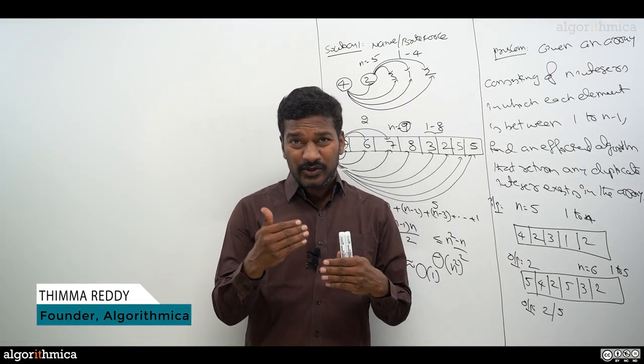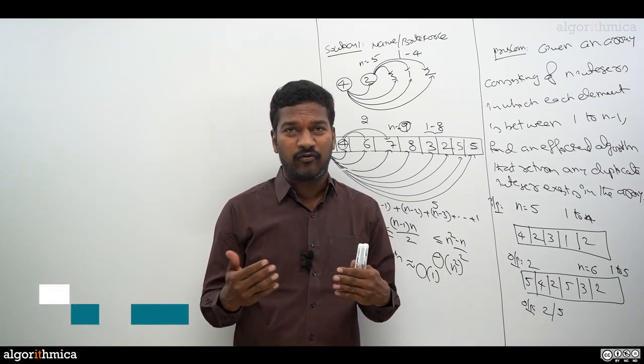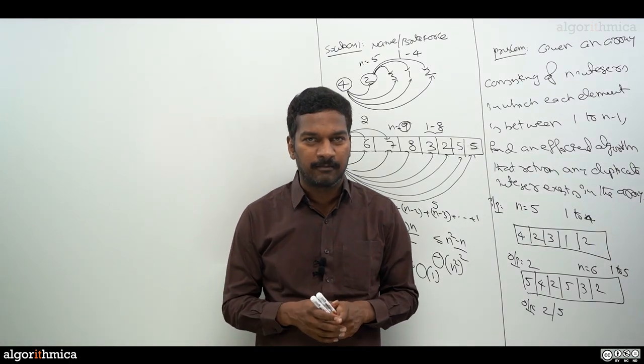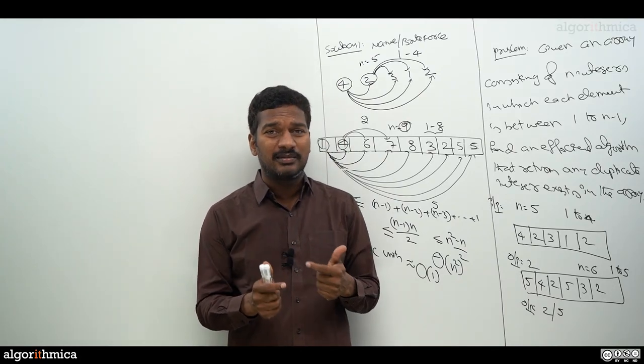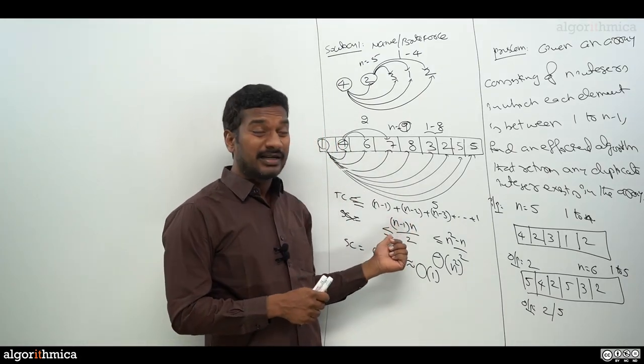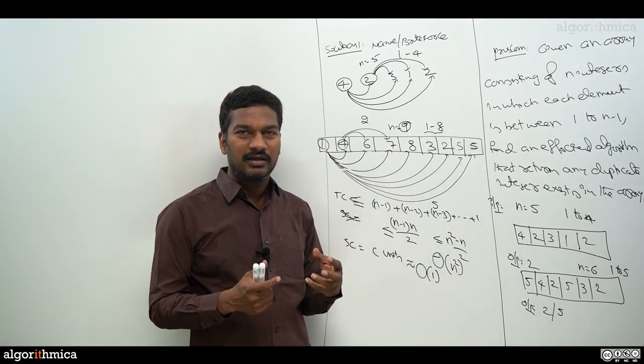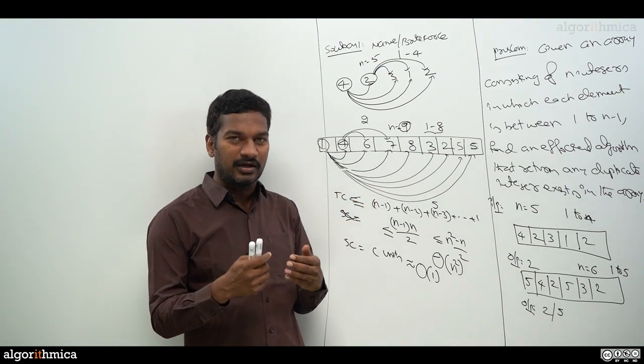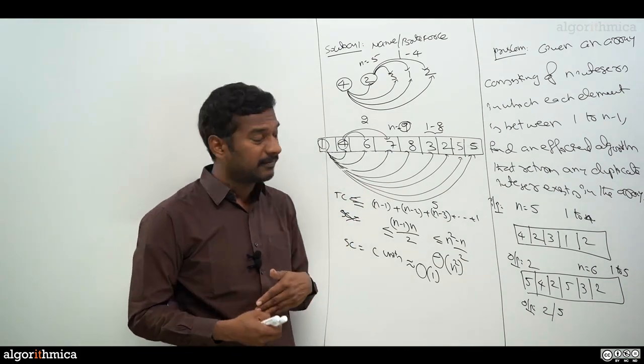The n-square algorithm can really perform badly when n is going bigger and bigger. We are forced to think of better algorithms than n-square. Let's go into the idea number one to see if there's any inefficiency we can discover which can lead to better solutions.